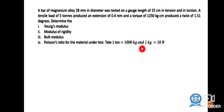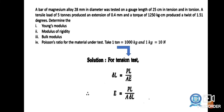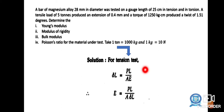Solution: For the tension test, the formula for change in length is ΔL = PL / (AE), where P is load, L is length, A is area, and E is Young's modulus. Rearranging, E = PL / (A · ΔL). That is the Young's modulus formula.